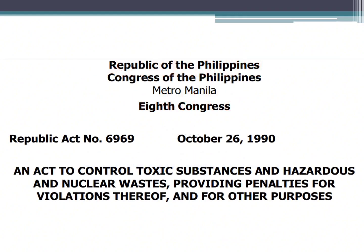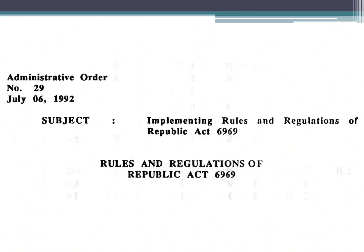But first, let's understand the legal framework that governs it. The legal framework governing toxic substances, hazardous, and nuclear wastes in the Philippines began with the creation of Republic Act 6969, enacted on October 26, 1990. This Act aims to regulate and control the management of these substances, imposing penalties for violations, and addressing various related concerns. Supplementary to this Act are subsequent administrative orders issued to further refine regulations and ensure effective implementation.